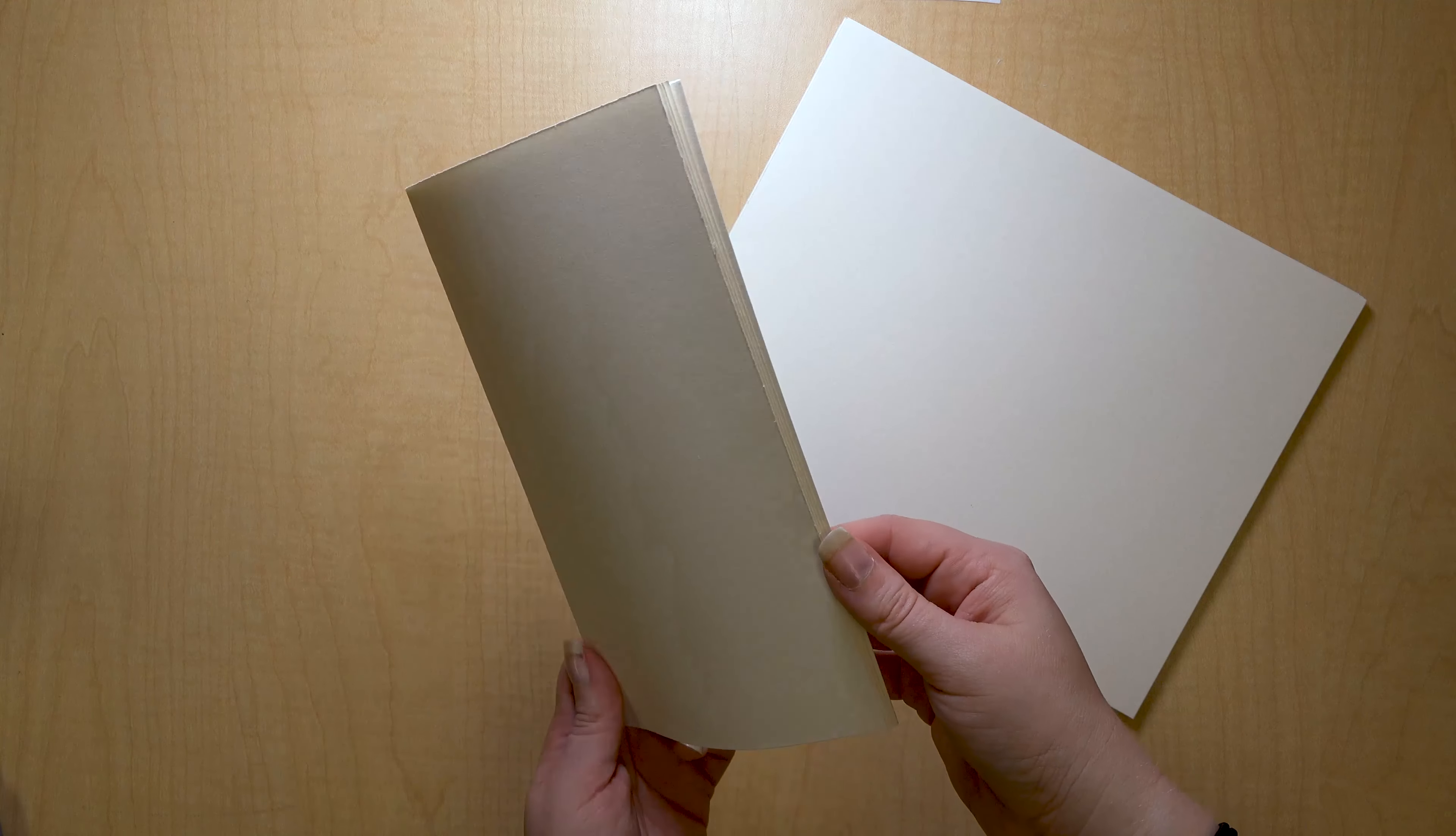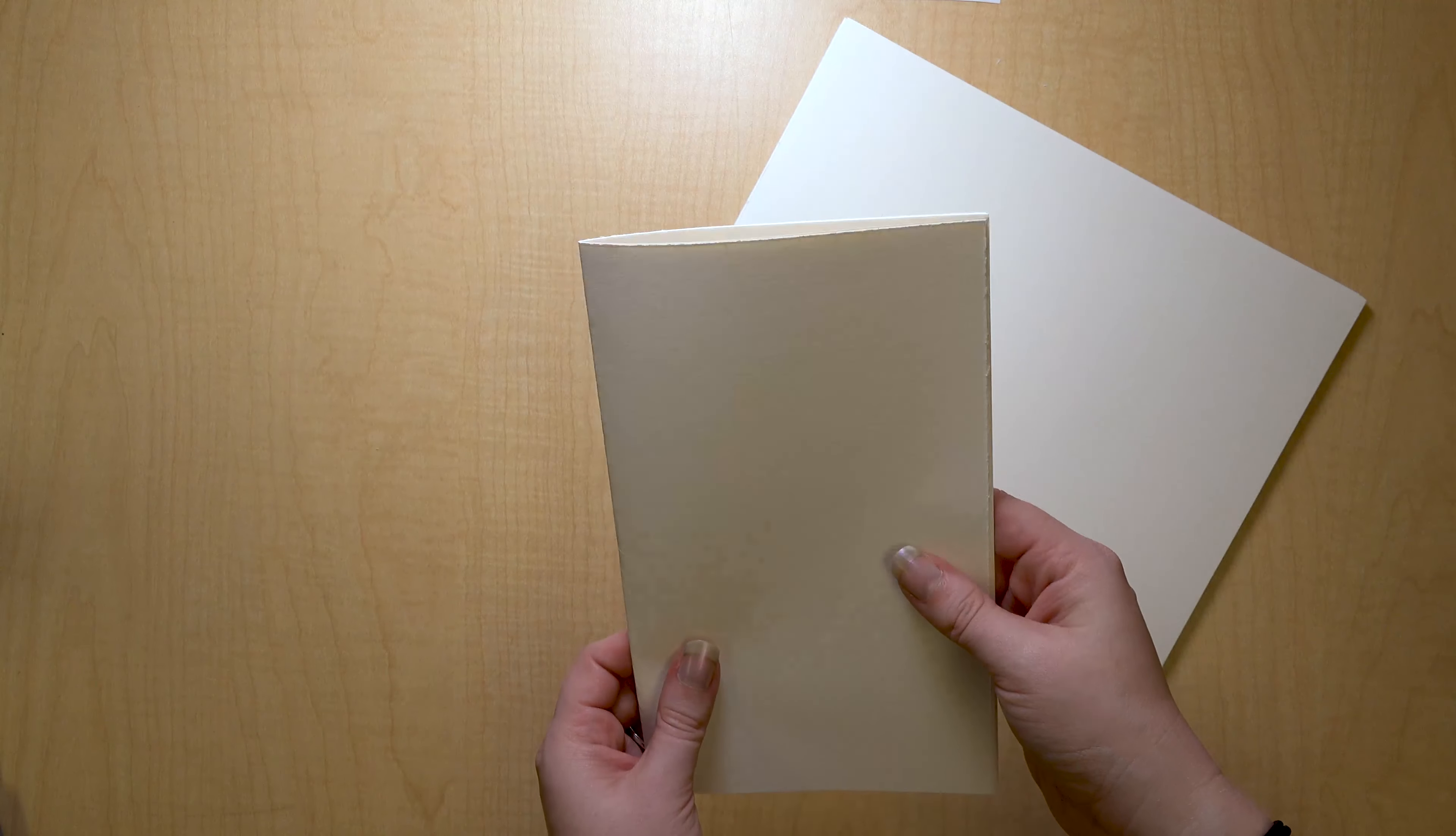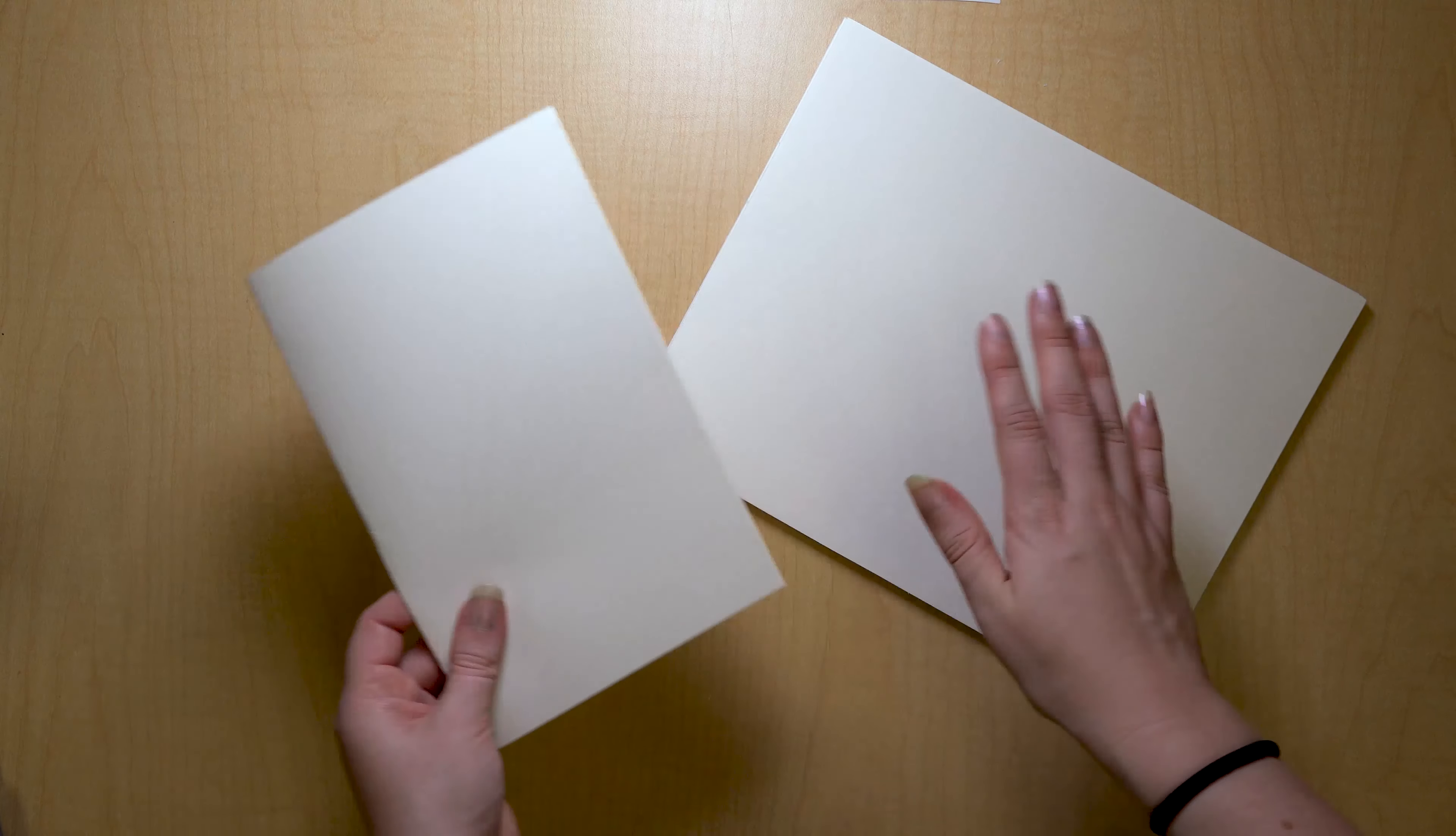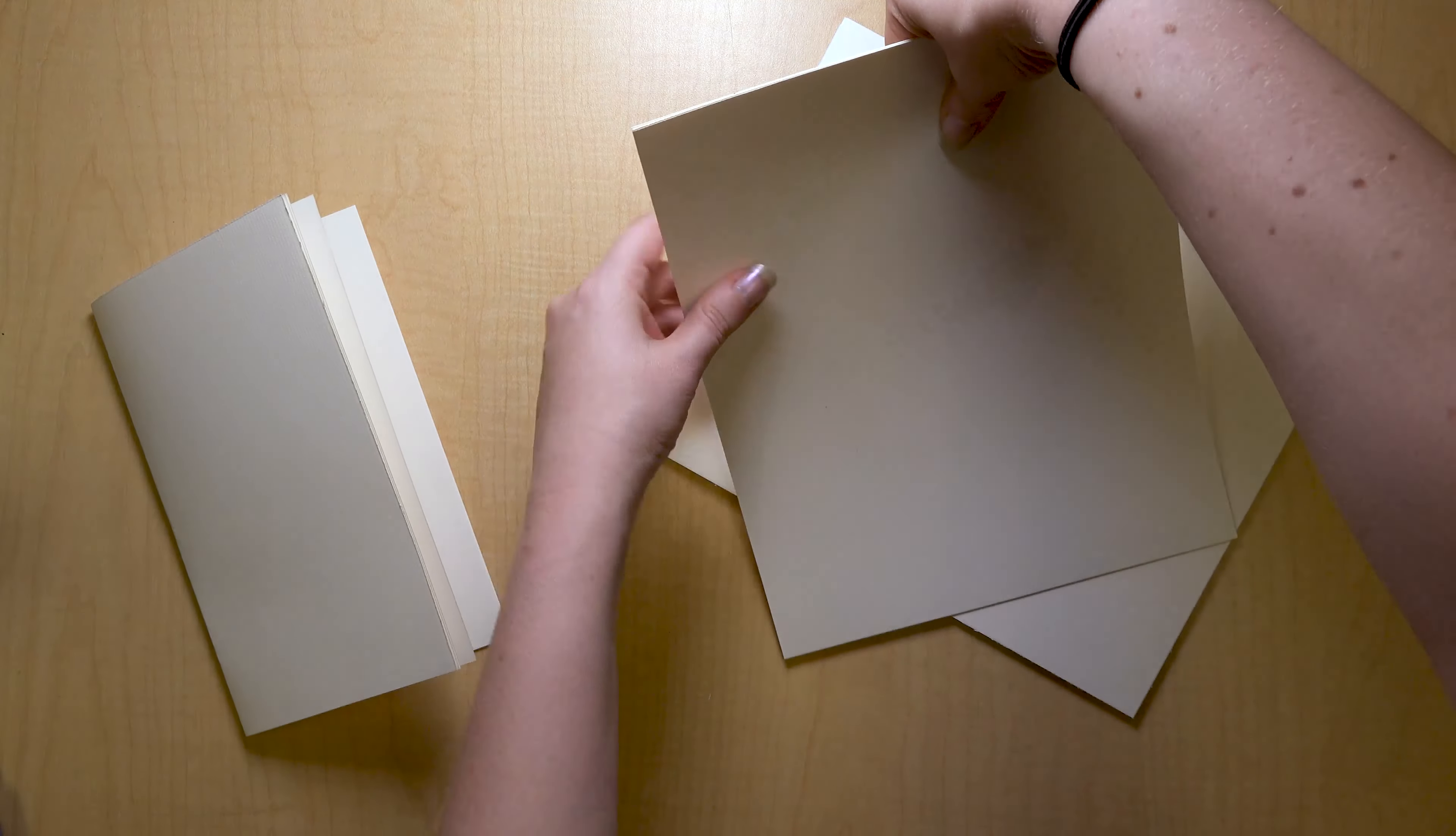Once all the paper is the right size, we're going to turn the pieces into signatures. A signature is made up of a handful of pieces of paper folded in half. You can think of it as a book within your book. Using signatures to make your notebook helps to keep the pages nice and even. Take 3 or 4 pieces of paper at a time and fold them in half width-wise. I'm just setting them off to the side in a little pile as I finish them.